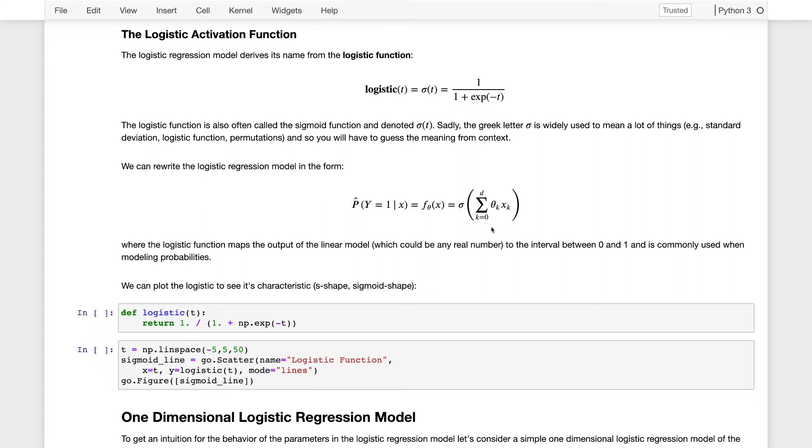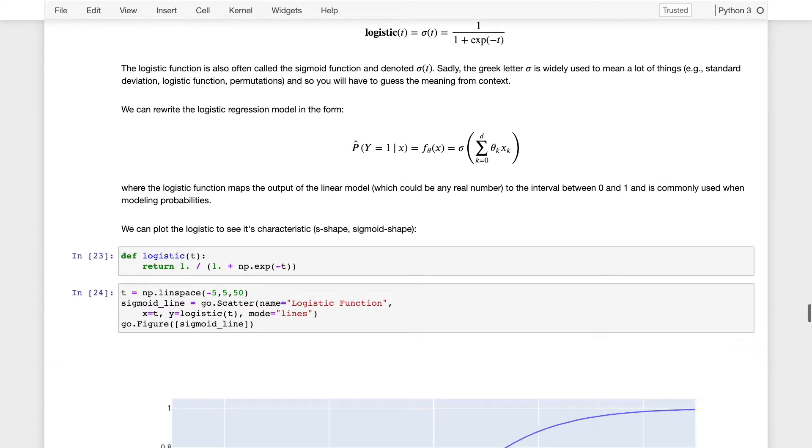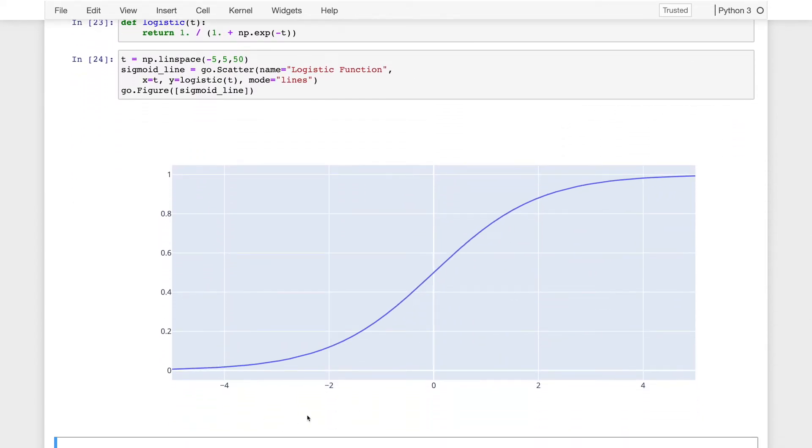To get an idea of what this sigmoid function or logistic function looks like, let's plot it. Here we've plotted the logistic function. The x-axis is just a scalar t, and the y-axis is the value of logistic function for different values of t. You see it has this characteristic sigmoid curve where it starts out at zero, or very close to zero.